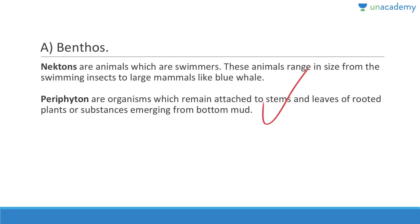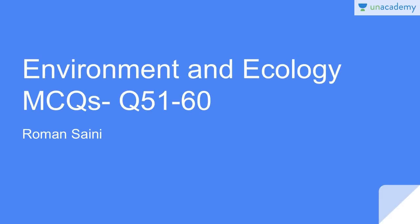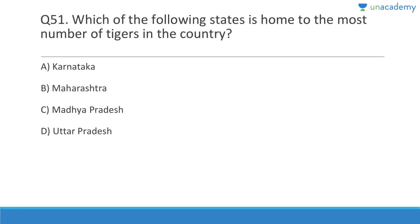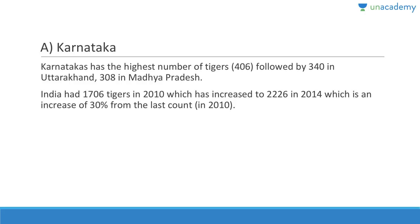We continue our course on environment and ecology. By the time we're done with this course you won't need to read any book, as the best way to learn according to science is in question-and-answer format. Question fifty-one: Which of the following states is home to the most tigers in the country? It is a typical question because the tiger is the national animal of India. Answer is Karnataka, which has the highest number of tigers — around 406, followed by Uttarakhand with 340 and Madhya Pradesh with 308. We currently have around 2,300 tigers — an increase of 30 percent from the last count.